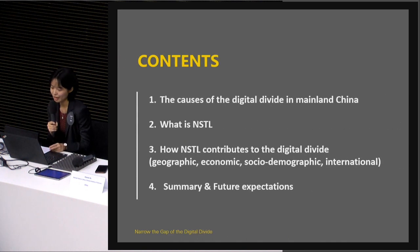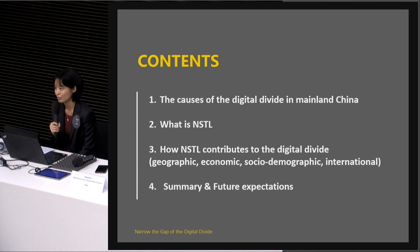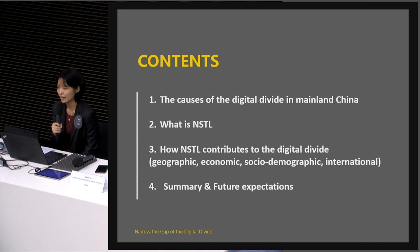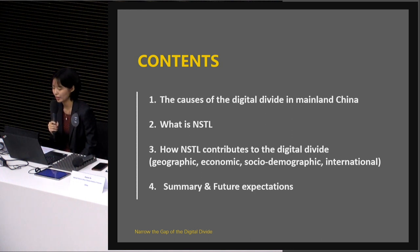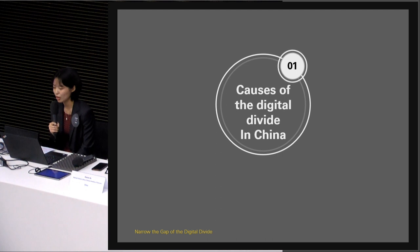The outline of my presentation today consists of four parts. Firstly, I will give you an introduction about the causes of the digital divide in mainland China for the last several years. Then the next two parts will present how NSTL contributes to bridging the gap. And finally, a short summary and some future expectations of NSTL will be given. Let's start with the causes of the digital divide in mainland China.